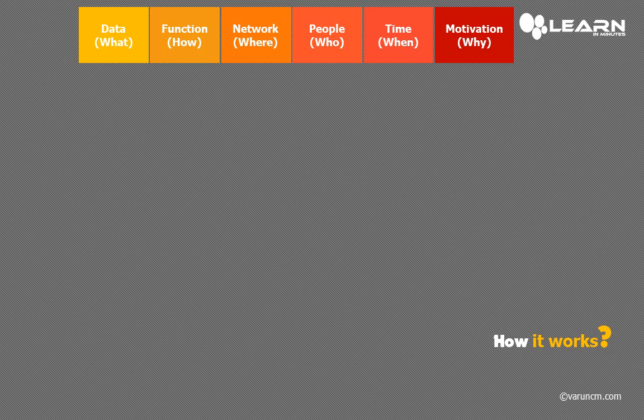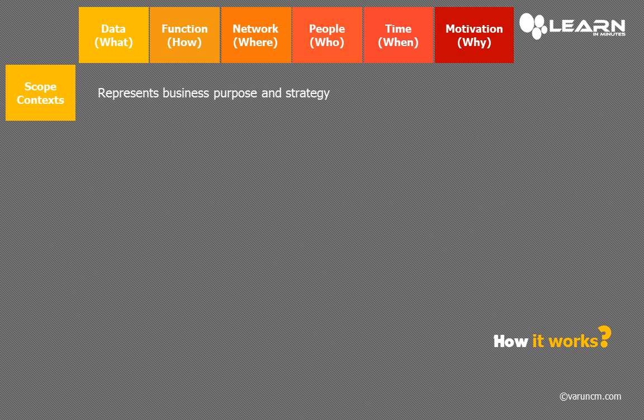These columns answer the W5H questions — that is, what, where, who, when, why, and how. Now let us look into the six rows available in the SACMAN framework. Starting from number one: scope context, which represents the business purpose and strategy.